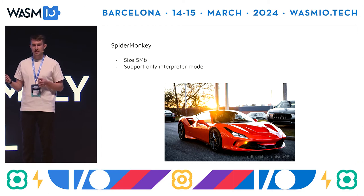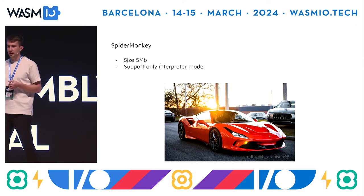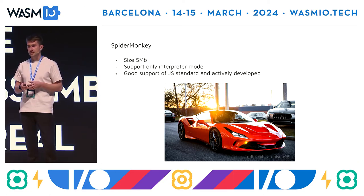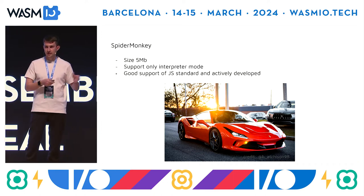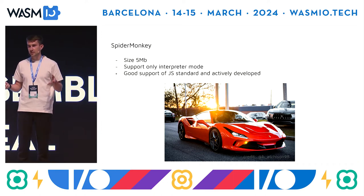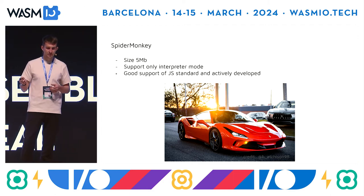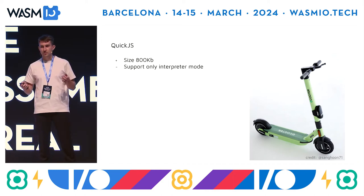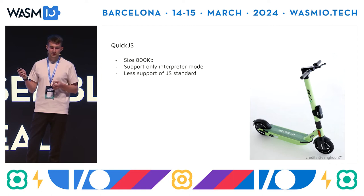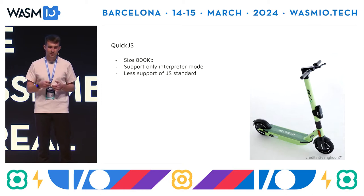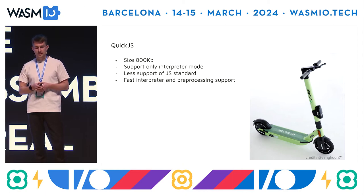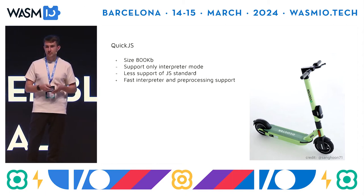SpiderMonkey is like a new good Ferrari — it has a comparably big size around five megabytes, supports only interpreter mode compiled to WebAssembly because there is no code generation, and it provides perfect support of all JavaScript features and standards because it's actively developed under Mozilla. QuickJS is very small, supports only interpreter mode compiled to WebAssembly, has less support of JavaScript standards, but has a very fast interpreter and provides support for pre-processing JavaScript into bytecode.